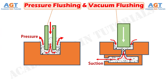In pressure flushing, also called injection flushing, fresh dielectric liquid is pumped into the inter-electrode gap, which automatically displaces the used contaminated dielectric. In vacuum flushing, also called suction flushing, the used dielectric is directly sucked from the inter-electrode gap and is delivered for cleaning and recycling.